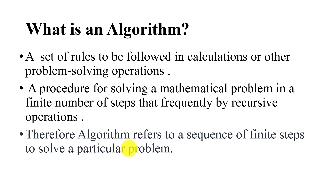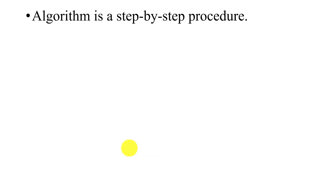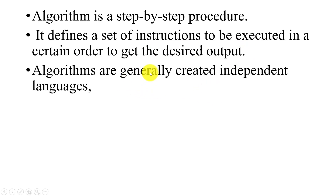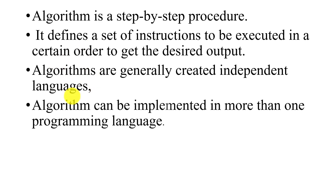Now let us understand the definition of algorithm. Algorithm is nothing but a step by step procedure or process. We define a set of instructions to be executed in a certain order to get the desired output. We follow some set of instructions or rules, executed in sequential order, to get the desired output. This is the definition of algorithm. Algorithm can generally be created independent of language — by using an algorithm we can write any kind of program.